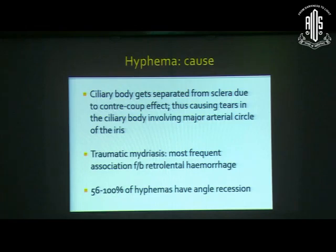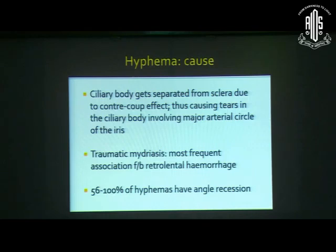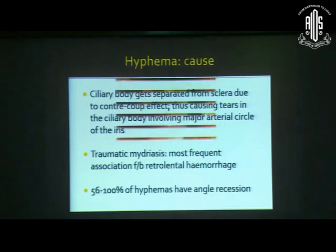Hyphema occurs as the ciliary body gets separated from the sclera due to a contrecoup effect, causing tears in the ciliary body involving the major arterial circle. Traumatic mydriasis is the most frequent association seen with hyphema, followed by retrolental hemorrhage. Notably, 56 to 100% of hyphemas may harbor angle recession, and therefore after resolution of the hyphema, one must screen for the presence of angle recession.